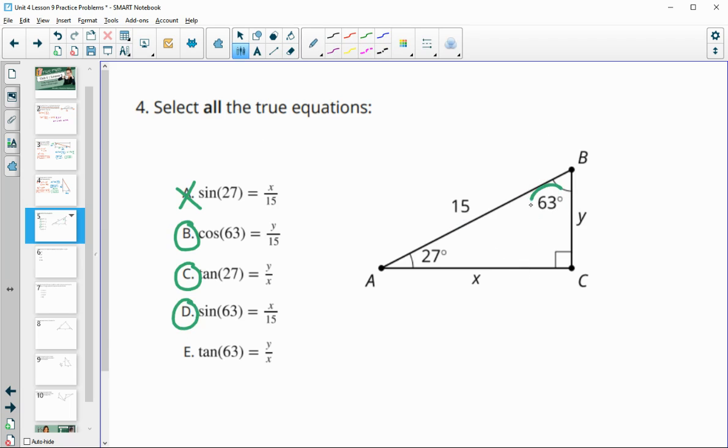And then tan 63 would be the opposite X over the adjacent Y. So they have this one flipped around, so this one is false.